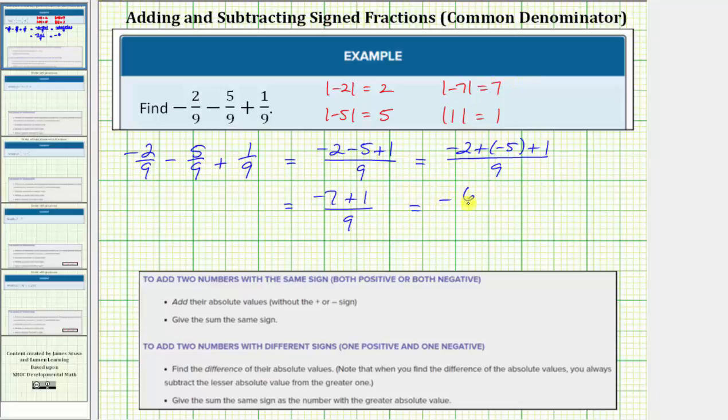Which gives us negative six ninths. This is the result, but notice how six and nine share a common factor of three, and therefore we need to simplify the fraction.